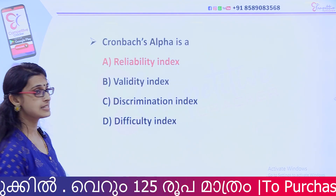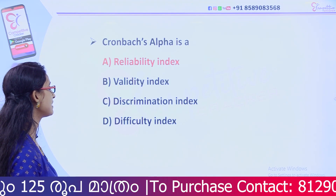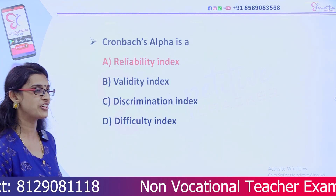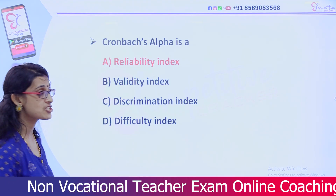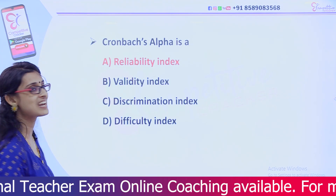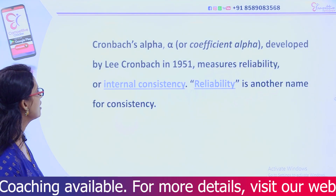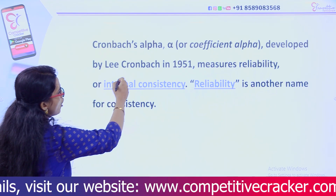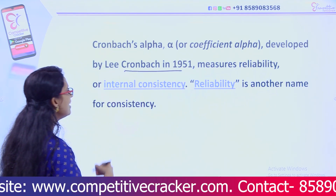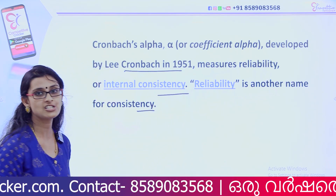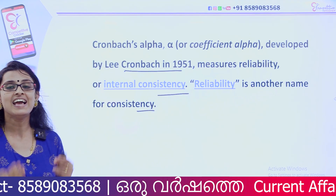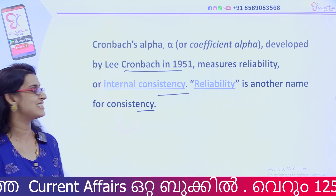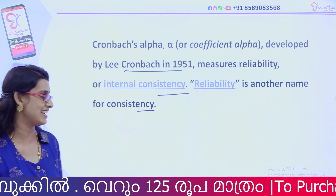Cronbach's alpha is: Option A, Reliability Index; Option B, Validity Index; Option C, Discrimination Index; Option D, Difficulty Index. The right answer is Option A, Reliability Index. Cronbach's alpha was developed by Lee Cronbach in 1951. It is a measure of reliability — how relevant, correct, and consistent a research instrument is.